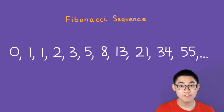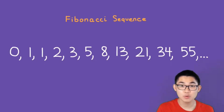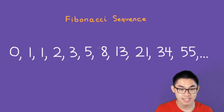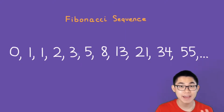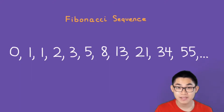The Fibonacci sequence is a sequence where every number is the sum of the two previous numbers. For example, if you take a look at the number 8, we can see that 8 is the result of adding 3 and 5 together. Now if you look at 21, it is the same thing — 21 is the sum of 8 and 13.